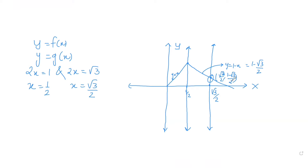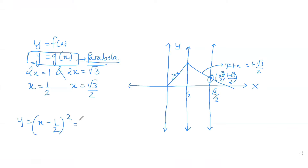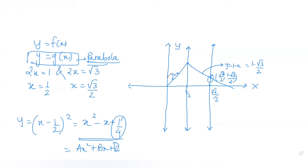Now g(x) is a parabola given by (x - 1/2)². Expanding it, we get x² - x + 1/4. Comparing with ax² + bx + c, c = 1/4 is the y-intercept, the vertex is at (1/2, 0), and since a = 1 is positive, we get a U-shaped parabola.